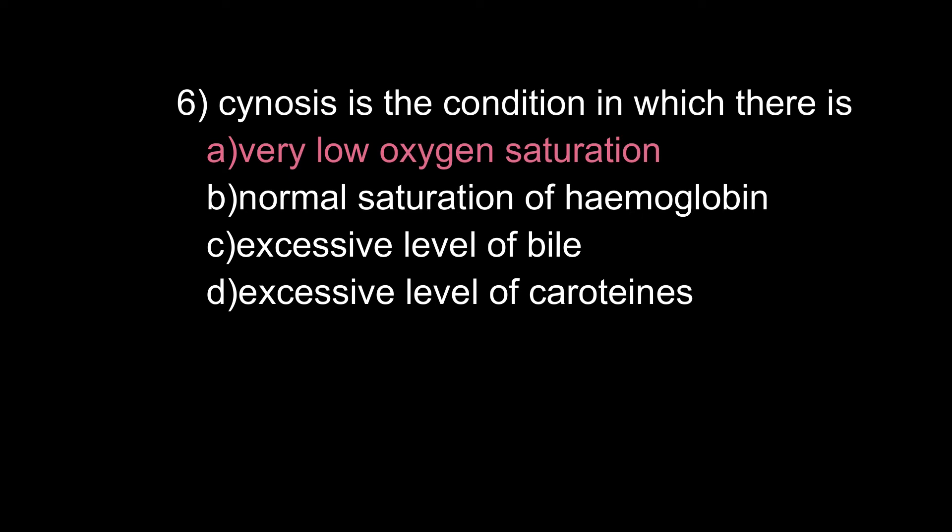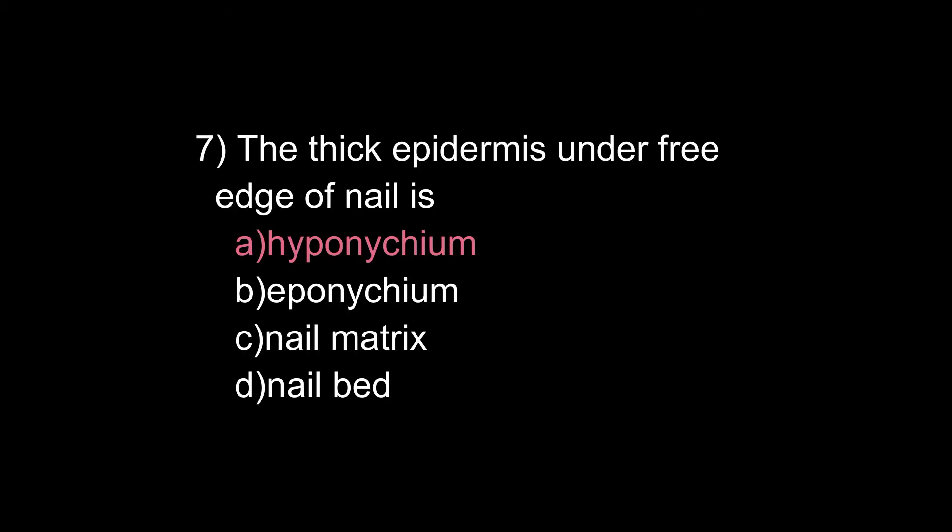Cyanosis is the condition in which there is — very low oxygen saturation, normal saturation of hemoglobin, excessive level of bile, or excessive level of carotene? The correct answer is very low oxygen saturation. Cyanosis is the bluish appearance of the skin due to very low oxygen saturation. The thick epidermis under the free edge of the nail is — hyponychium, eponychium, nail matrix, or nail bed? The answer is hyponychium.